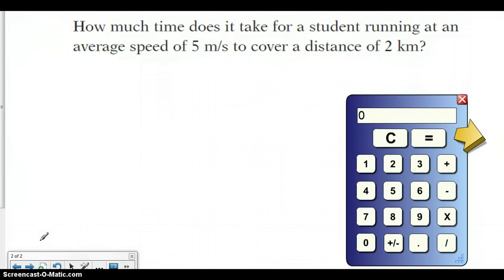Now we can also do a couple of other things. In this case, it tells us how much time does it take for a student running at an average speed of 5 meters per second to cover a distance of 2 kilometers. Well, first thing I notice as I'm reading this is that I have two different units of distance. So I have kilometers and I have meters. I'm going to have to change that and make them equal each other. So the first thing I'm going to write down is my speed, so all my variables again: speed, distance, and time.